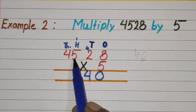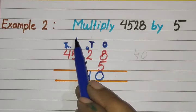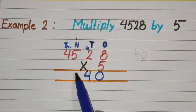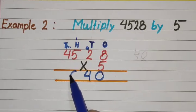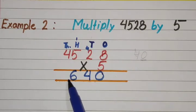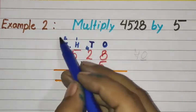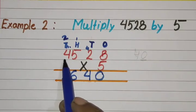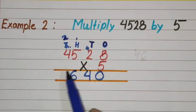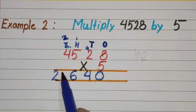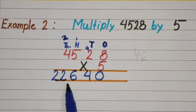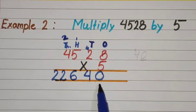Now, 5 times 5 is 25, plus the carry of 1 equals 26. We write 6 and carry the 2. Then 5 times 4 is 20, plus the carry of 2 equals 22. So the answer is 22,640.